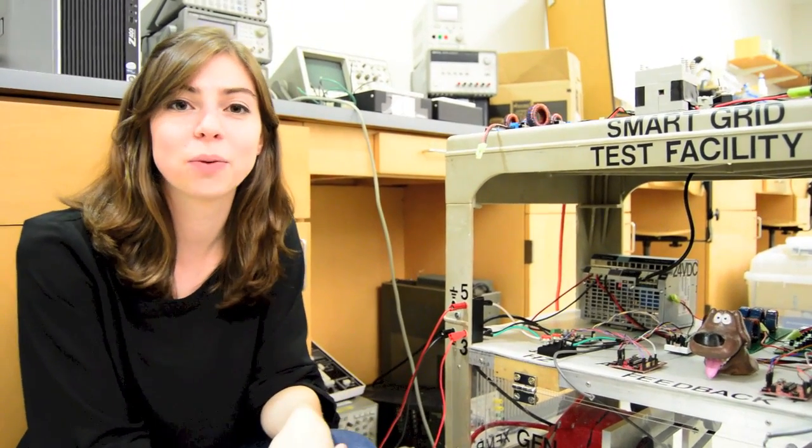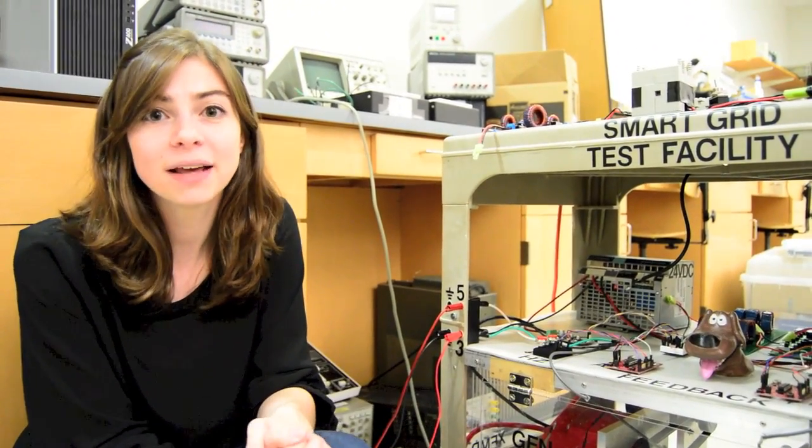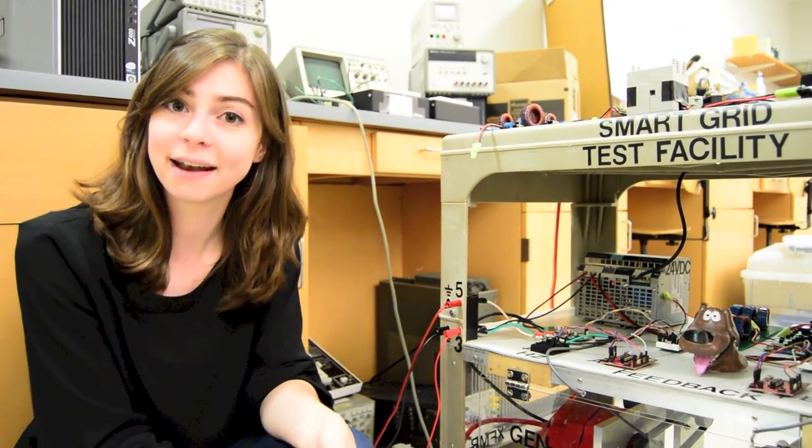Generation is really where our whole system starts. It's what produces all the power that we need on the grid. We wanted to make multiple generators that all feed into our power grid at the same time. We have three total generators—two of them we built mechanically out of a motor that spins an alternator.